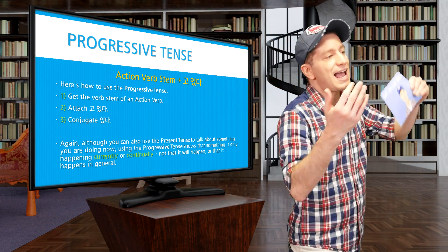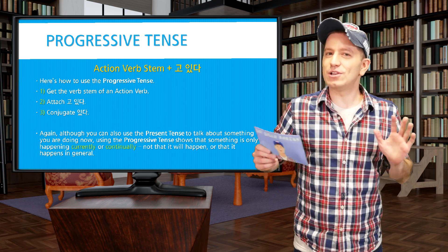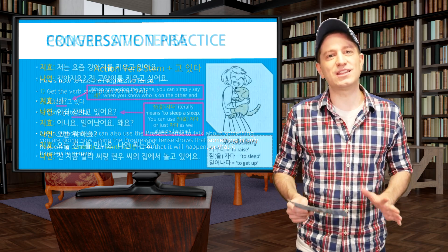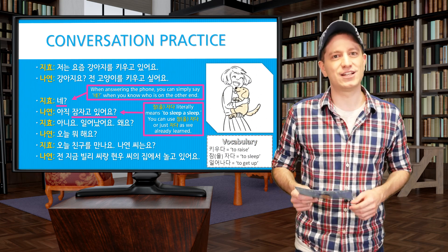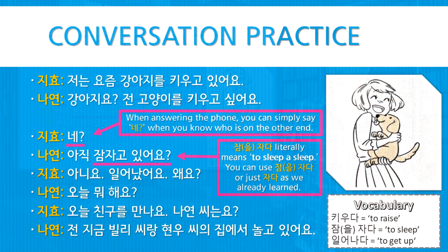Not that it will happen or that it just happens in general. So let's do a conversation practice using the progressive form. We have two people: 지효 and 나연. First, 지효 says 저는 요즘 강아지를 키우고 있어요 — 'I am recently, or these days, raising a dog.' Then 강아지요? — 'A dog?' 전 고양이를 키우고 싶어요 — 'I want to raise, or I want to have, a cat.'